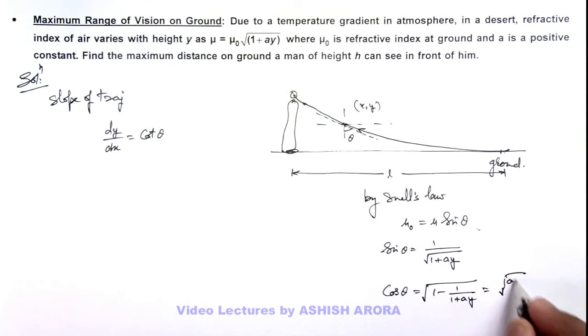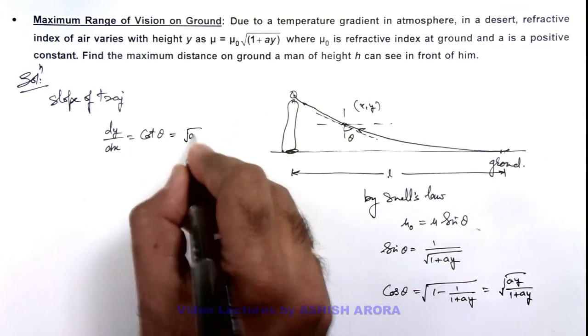root of ay·y/(1+ay). So here the value of cot θ is equal to √(ay·y).